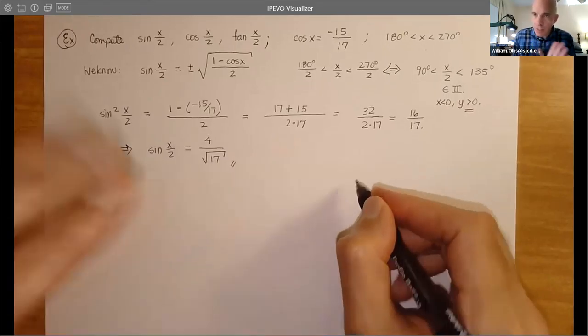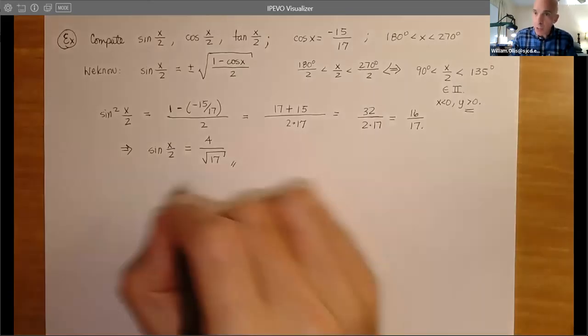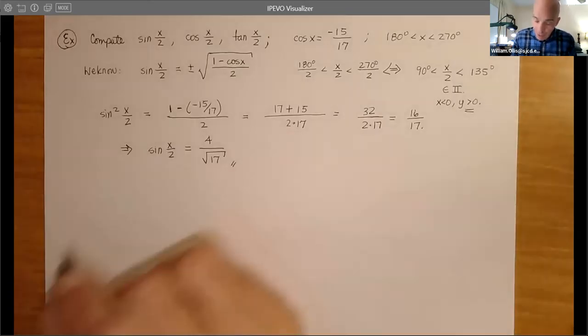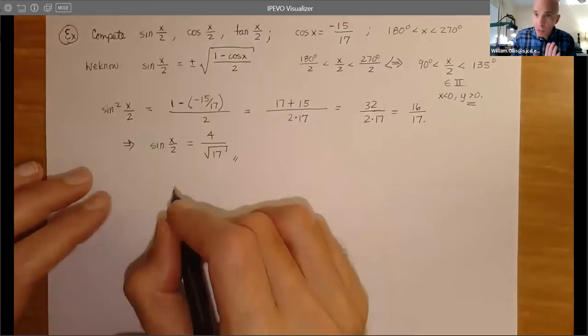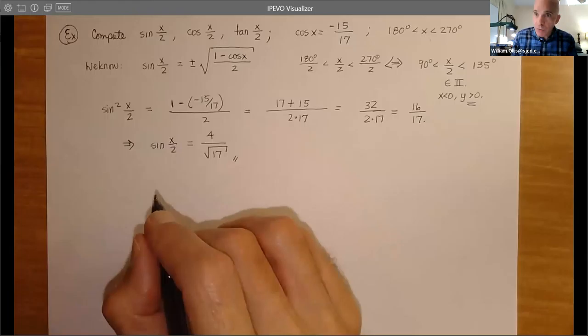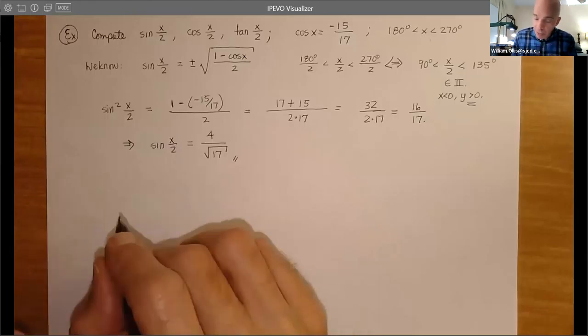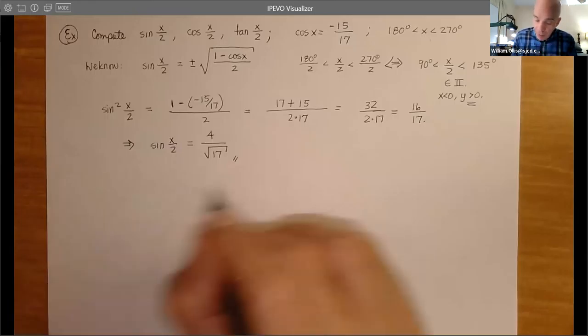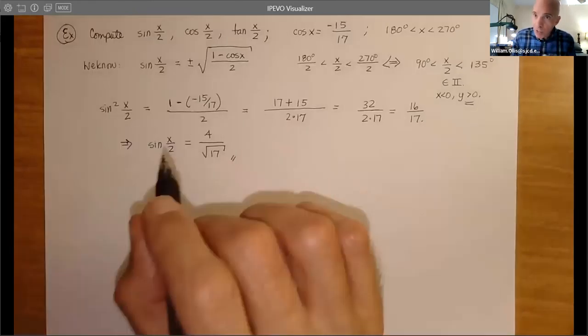So now this implies, choosing the positive: sine(x/2) is now the principal square root of 16/17, which will be 4/√17. No rationalizing required. That's a number and that's correct. Don't do extra work — not required. Follow the formatting directions.